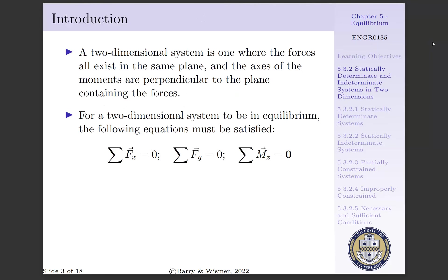A two-dimensional system is one where our forces exist in the same plane, such as the XY plane, and the axes of the moments are mutually orthogonal to this plane, such as the Z direction. For a two-dimensional system to be in equilibrium, we must satisfy the following equations.